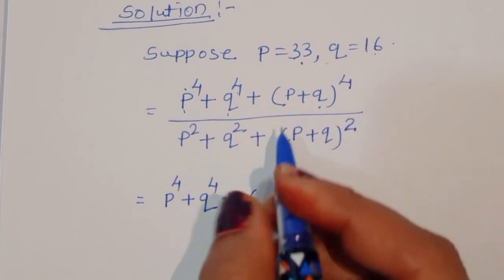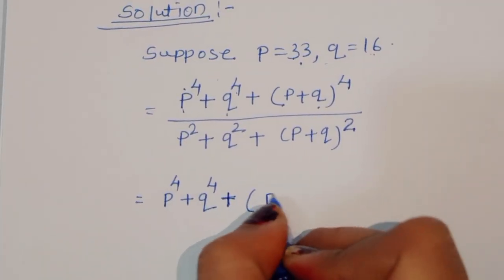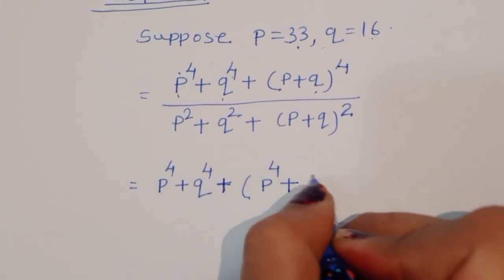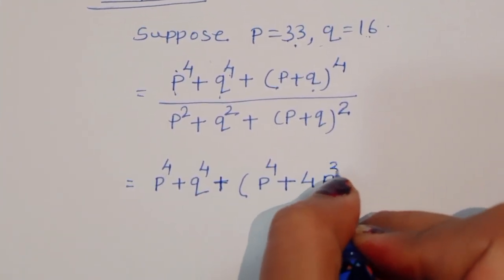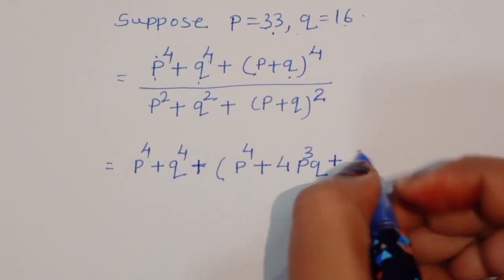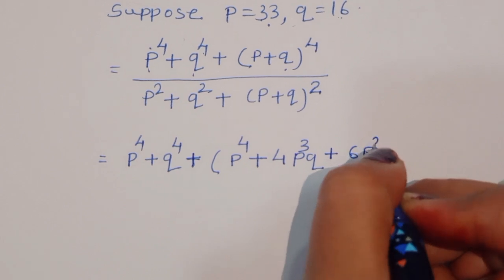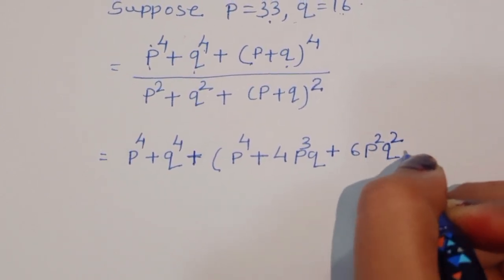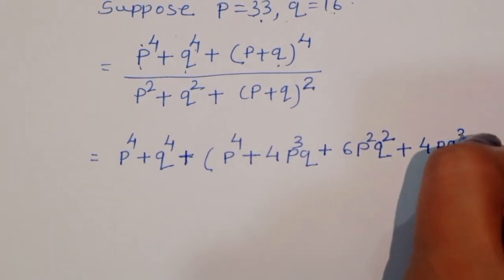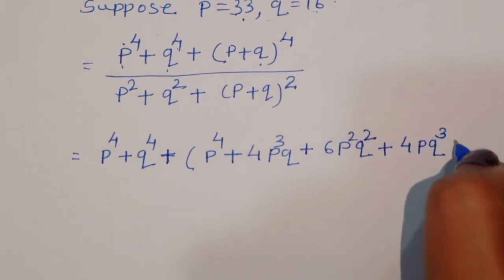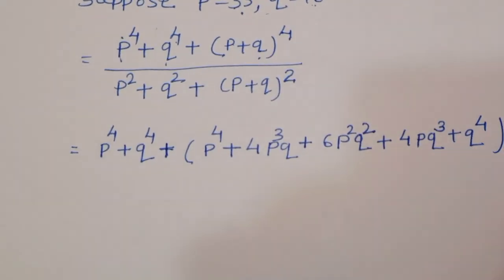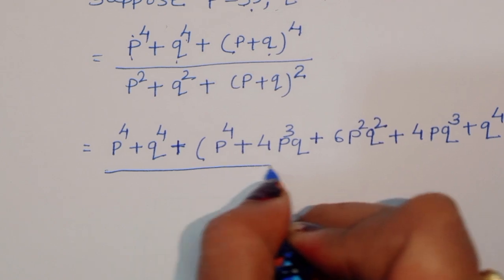Expanding (P+Q)⁴ divided by P⁴, we can write: P⁴ plus 4P³Q plus 6P²Q² plus 4PQ³ plus Q⁴, divided by P⁴.